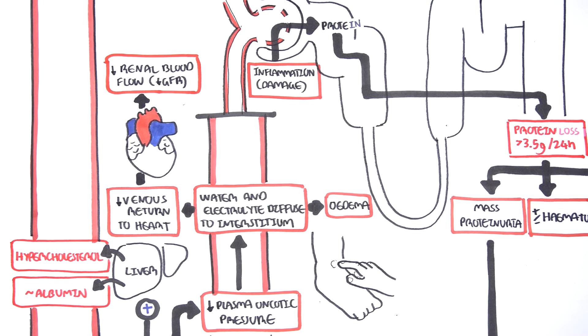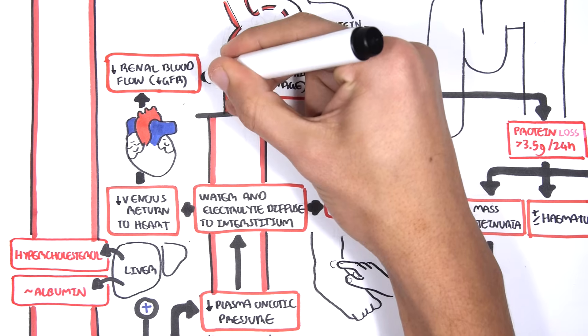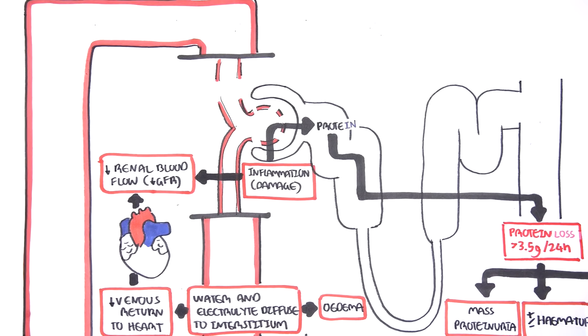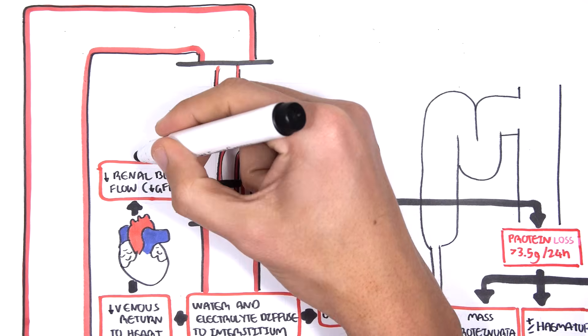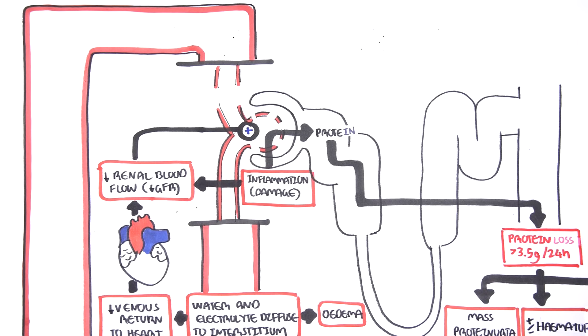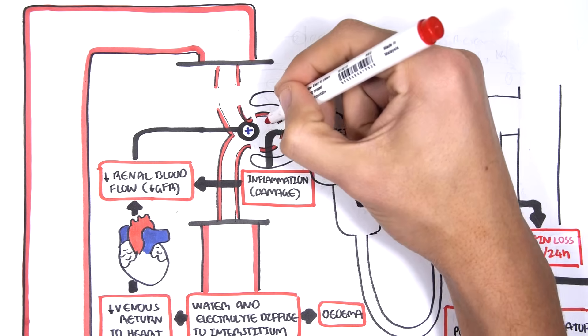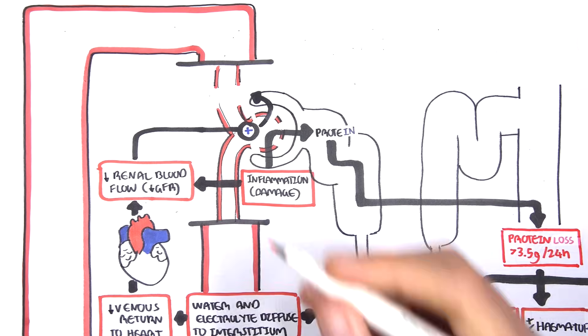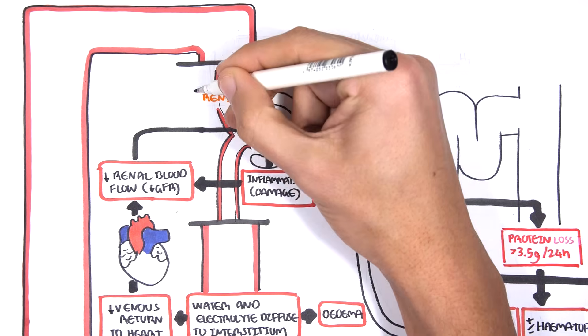GFR stands for glomerular filtration rate, essentially the rate at which the kidneys filter circulation. The inflammation occurring in the kidneys will also contribute to decreased GFR. When you have decreased GFR and blood flow, this stimulates cells at the head of the nephron to produce a molecule called renin.